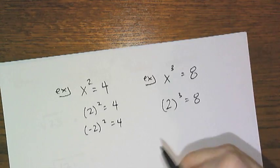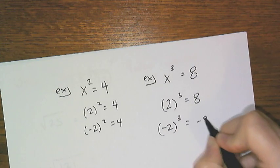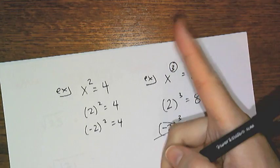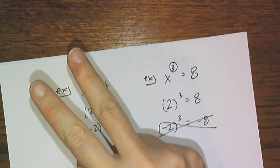And it's not going to be negative 2, because if I took negative 2 and cubed it, I'd get negative 8. So odd indices, one root, even indices, two roots.